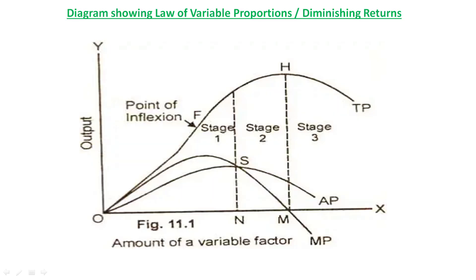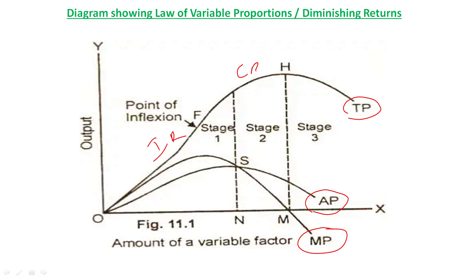When the same data is plotted on a graph, it gives curves for TP (total product), AP (average product), and MP (marginal product). The three stages identified are increasing returns, constant returns, and decreasing returns.